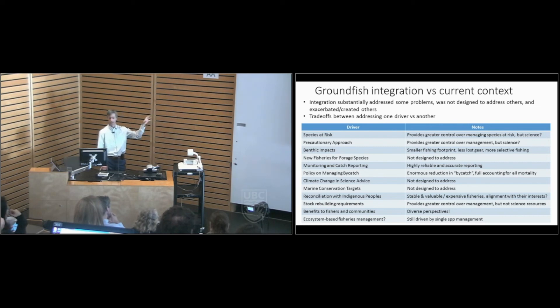So going back to that list of drivers I had at the beginning, seeing them briefly on the left. In summary, this work on integration really helped us with certain obligations or responsibilities that we might associate with more traditional fisheries management. So it helps us with species at risk because we can exert greater management control over managing any species at risk. It doesn't necessarily help with the science around the resources needed to assess all those species. It can certainly help in us taking a more precautionary approach, again, because it provides us greater control. It has reduced benthic impacts because it's resulted in a smaller fishing footprint, which Robin will touch on. It hasn't really done anything with respect to forage species, wasn't really intended to address that, but certainly has resulted in what a lot of people call the gold standard with respect to monitoring and catch reporting. So we now know everything that comes over the side of the boat, and we weigh everything by species when it's landed, and it's all independently verified, which is very useful in terms of ensuring sustainability.